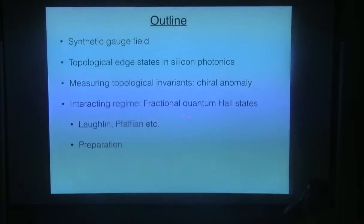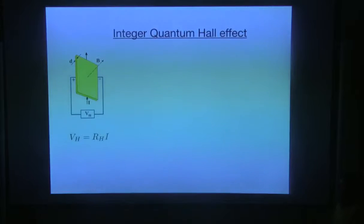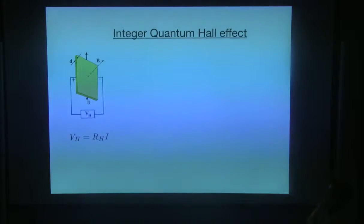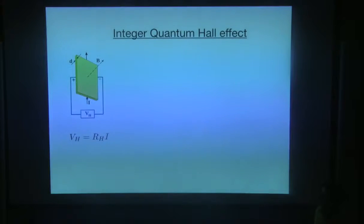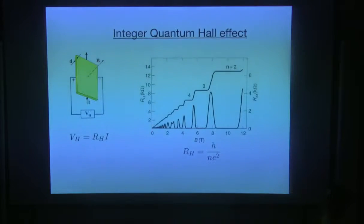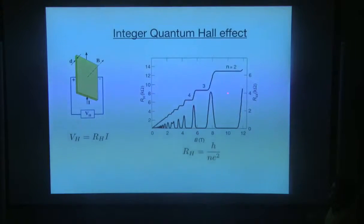And then, what kind of Hamiltonian can we actually implement, and how we can prepare them. So in order to start, I'll just review integer quantum Hall effect in one slide. In the integer quantum Hall effect, we have a two-dimensional electron gas and a magnetic field perpendicular to it. We look at the transverse conductance or transverse resistance. What we see is that the Hall resistance as a function of magnetic field has these plateaus.